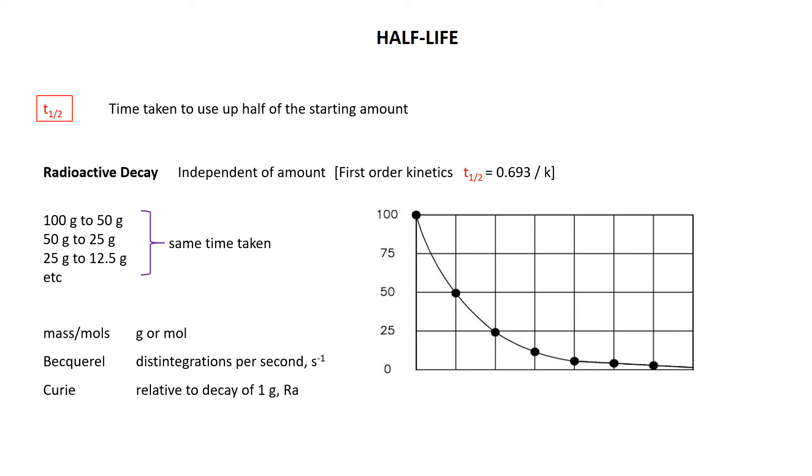Now, the unit, the Curie, is relative to the decay of one gram of uranium, and one Curie, the symbol for Curie is Ci for some weird reason, equals 3.7 times 10 to the 10 Becquerels. So you can expect to see, as you study more radioactivity, the amount of radioactivity expressed officially in Becquerels or in Curies.